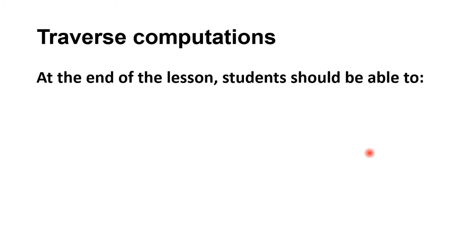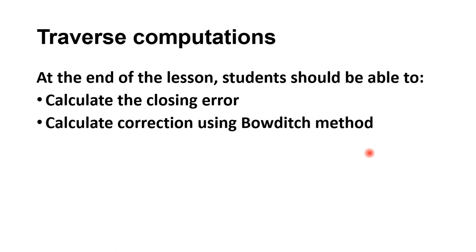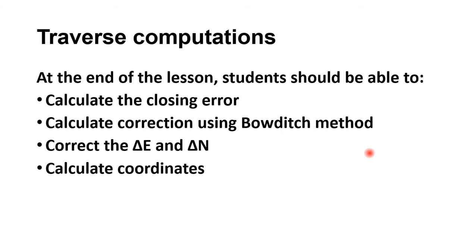At the end of the lesson, students should be able to calculate the closing error, calculate the correction using the Bowditch method, correct the change in eastings and change in northings, and also calculate the coordinates.